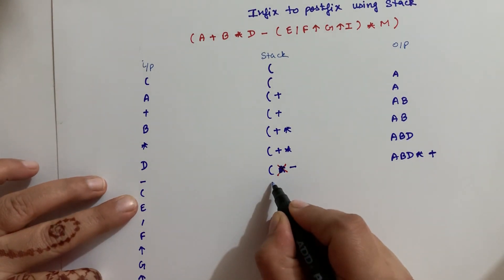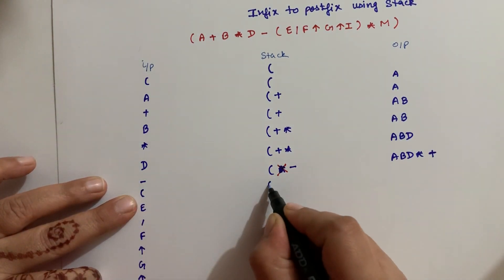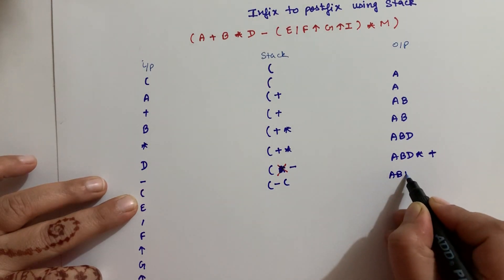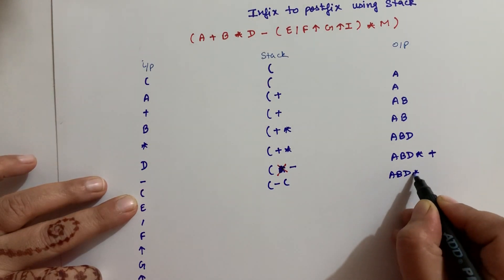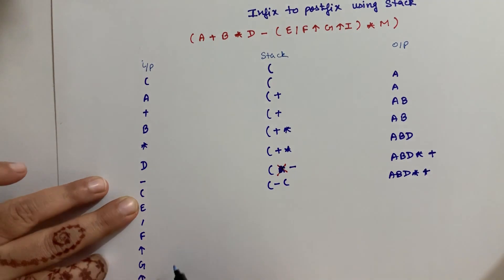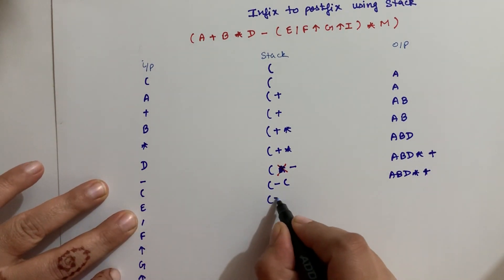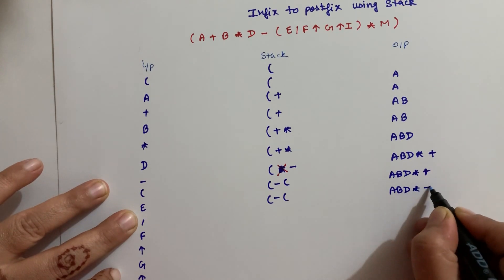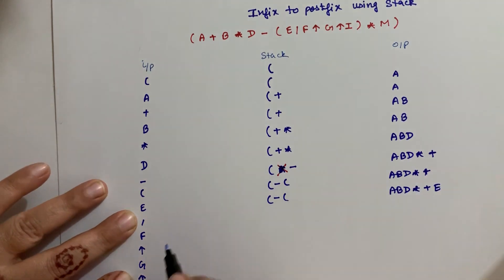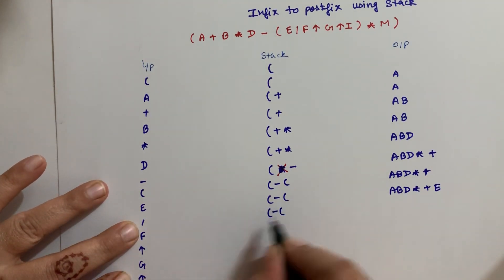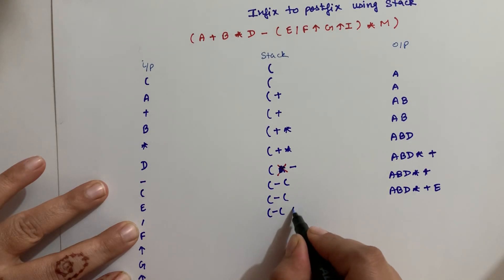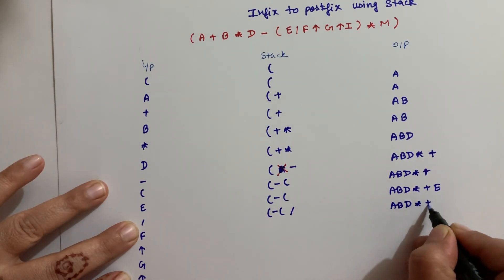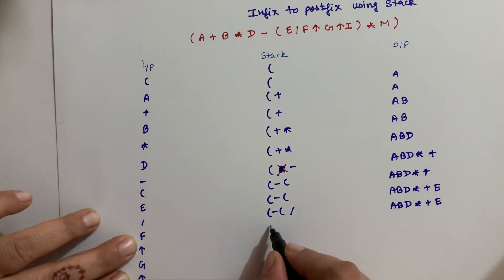Now comes an opening brace, which goes into the stack. Then operand D comes — output so far is A, B, D, plus. Then next operand E comes — output becomes A, B, D, into, plus, E. After that, the division operator goes inside the stack. Then comes F.